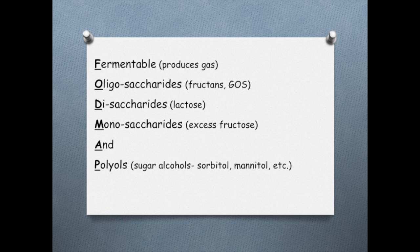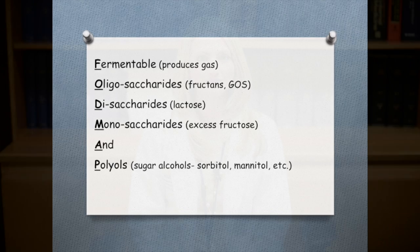The disaccharide, or double sugar, is lactose. The monosaccharide fructose is only a problem when in excess amounts compared to another sugar called glucose. Polyols are sugar alcohols such as sorbitol and mannitol. Rather than remember these scientific names, you can just call these carbs FODMAPs.